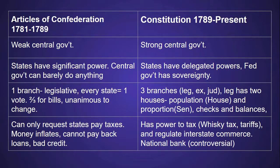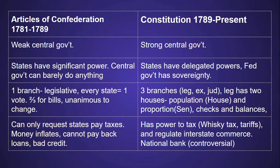A brief comparison of the structure of both governments: the Articles really only had one branch with a legislature in which every state had a vote. It was difficult to get anything done, because passing any bills required two-thirds of the states or more to agree, and it was nearly impossible to make changes to the government, as that required unanimous consent from all states. The government under the Constitution is much larger and more intricate. There are three branches — legislative, executive, and judicial. The legislative branch is bicameral, meaning two houses: the House of Representatives, which is based on population, and the Senate, in which every state has two senators. There are checks and balances on the power of the three branches.